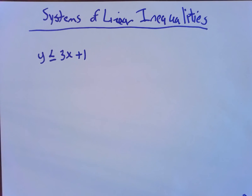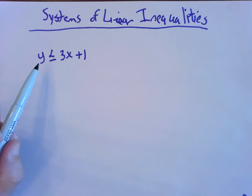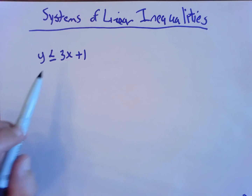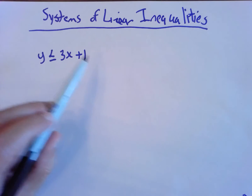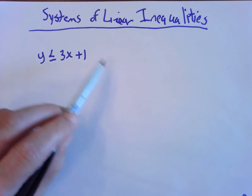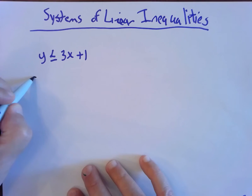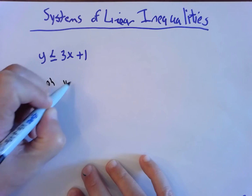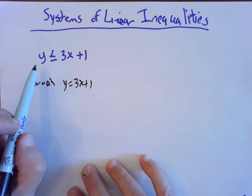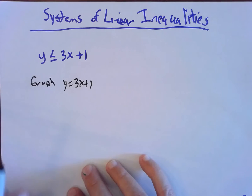Here we are talking about systems of linear inequalities. We'll start with graphing one single linear inequality. It's not a linear equation — it's not equals — it's got a less than or a greater than. Our goal is to graph this object, to shade some section of the xy plane that satisfies this statement. The first thing we do is graph the line itself.